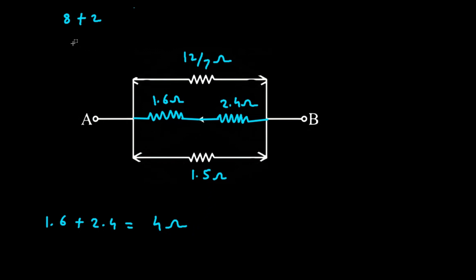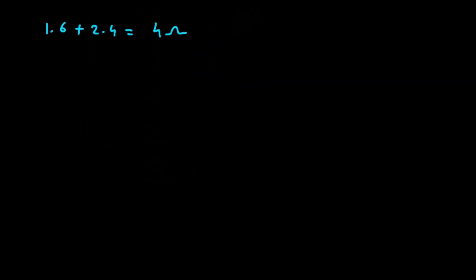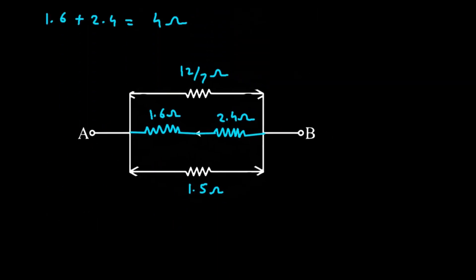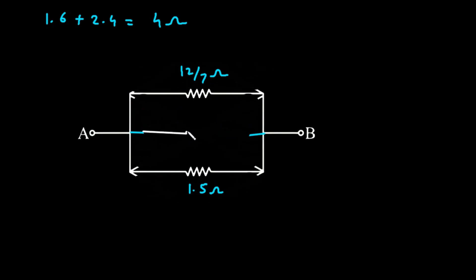Now, again, we can copy this circuit and replace these two resistances by a single resistance of 4 Ohm.